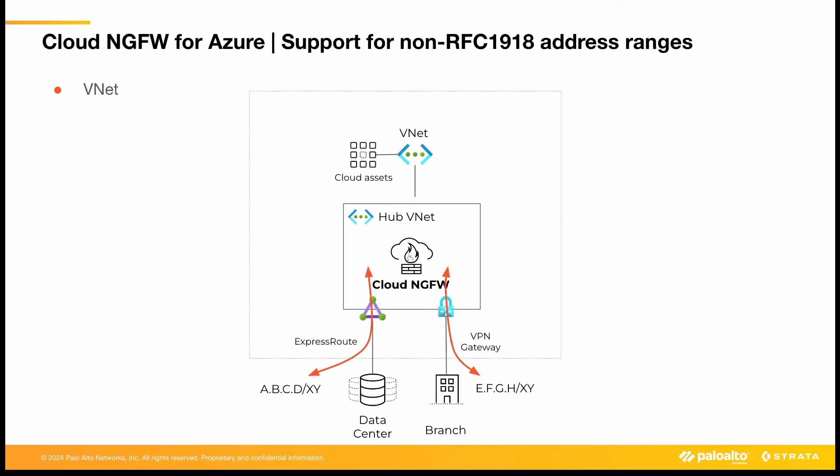Here's an example of such a scenario. It's a hybrid cloud topology where customer-owned public IP addresses are used internally in their data center and branch networks. These prefixes are advertised into Azure, and the firewall needs to treat this traffic as east-west.